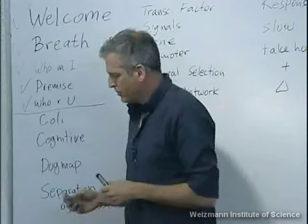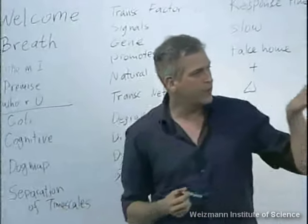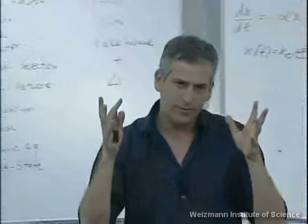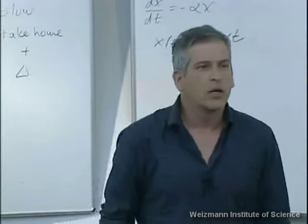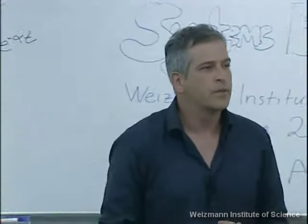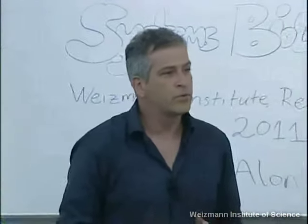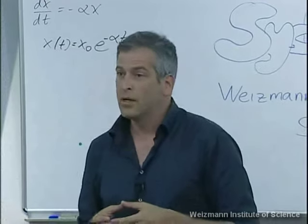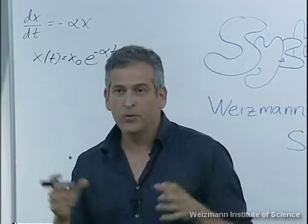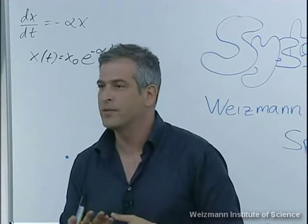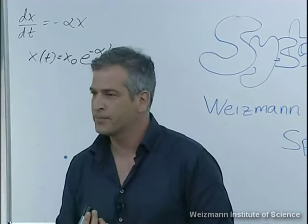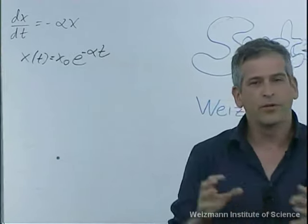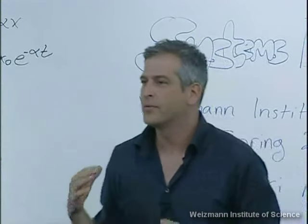In this course we're going to talk about several principles — it's organized by principles. The first part of the course, we'll talk about the brain of the cell: how the cell thinks about its environment, represents the world, and makes decisions. The brain of the cell turns out to be made of a small set of recurring circuit elements, and we'll understand those.